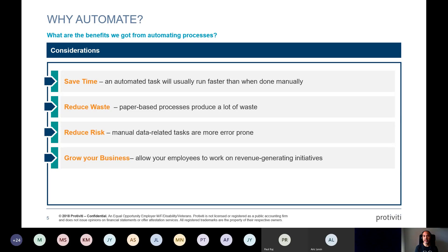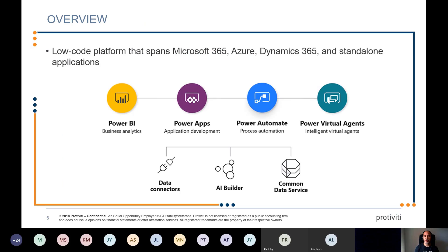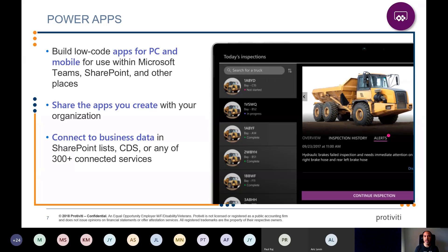You're also reducing risk that could be monetary or otherwise impacting your process. Growing your business: people doing mundane tasks can now have free time to actually help grow the business and generate more revenue. And the last one is when there is no other option — in some cases you want to interface with data but don't have access to that system, so through automation you can get that information without giving out the keys to the kingdom.